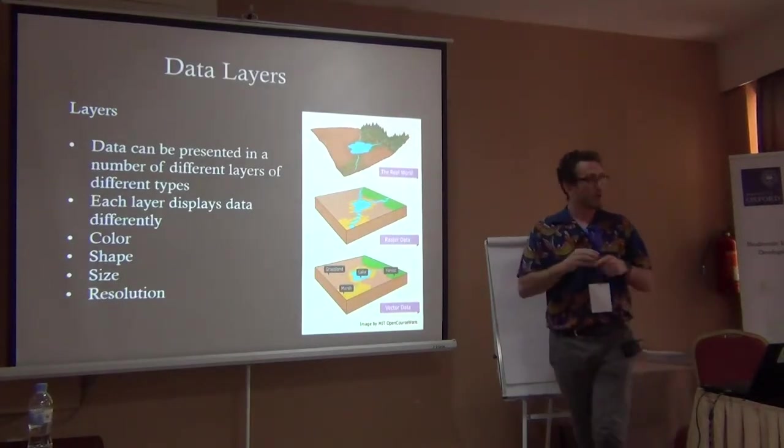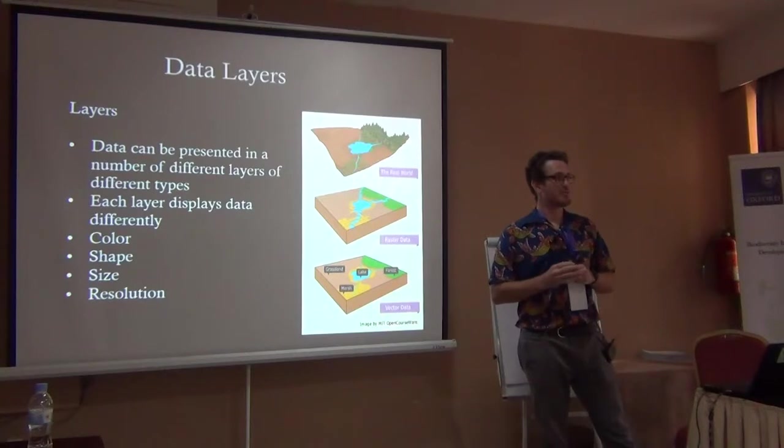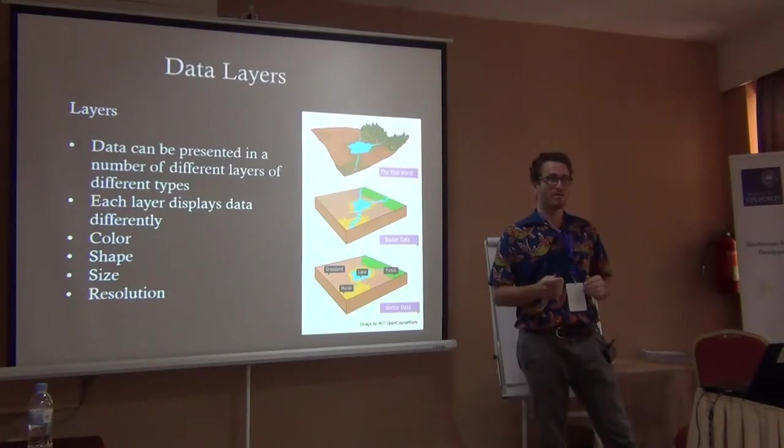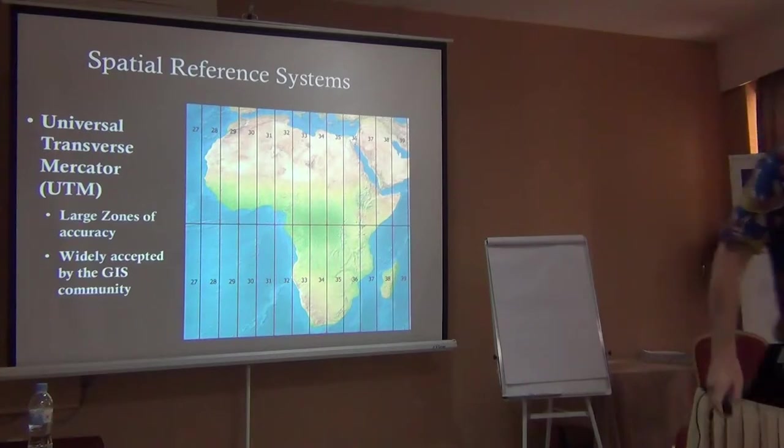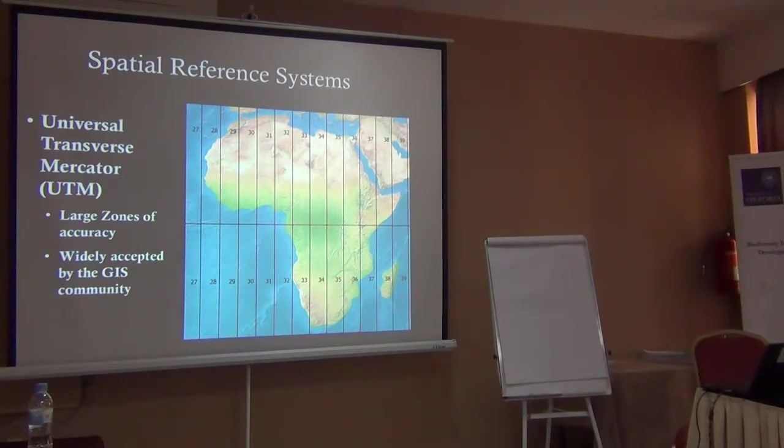When picking UTM zones, you also have to specify north or south of the equator — it'll appear as UTM 36 North or 36 South in the system. If you're south of the equator, pick the south one; if you're north, pick the north one. UTM zones are my go-to at the local scale.